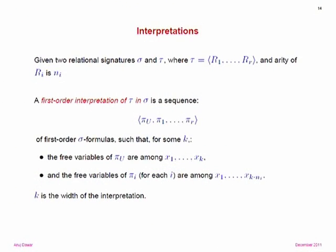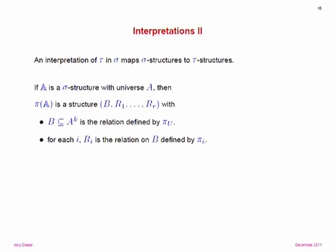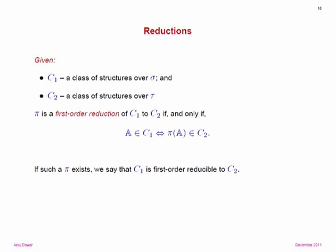An interpretation of tau in sigma defines a map from sigma-structures to tau-structures. This allows us to define the notion of a first-order reduction from a class of structures C1 to C2: pi — an interpretation of tau in sigma — is a first-order reduction of C1 to C2 if and only if it maps structures in C1 to structures in C2, and structures not in C1 to structures not in C2. It's just the usual notion of a reduction but now first-order definable. If such a pi exists, we say C1 is first-order reducible to C2.